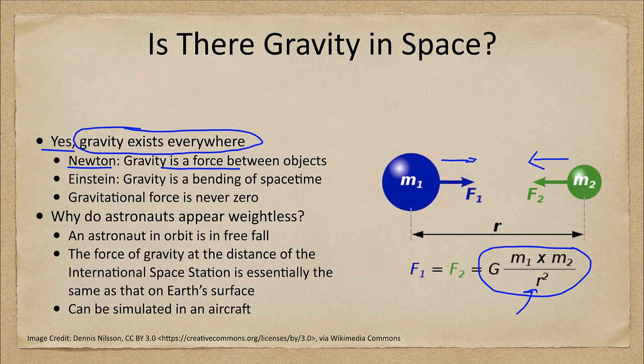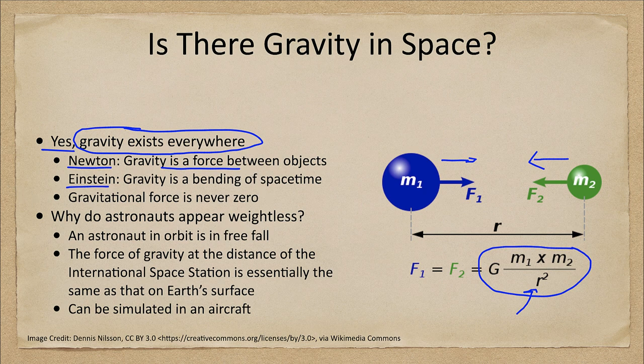Certainly, it would be essentially negligible if you get far enough away from any object. Now under Einstein, we look at gravity as a bending of space and time. And again, it would never be zero, the bending would get less and less as you get farther from the object, but it would never be zero. So gravitational force never equal to zero.